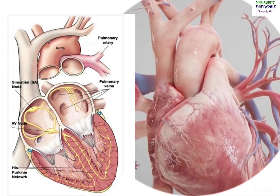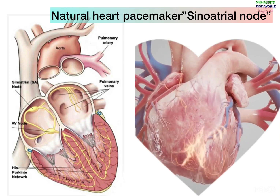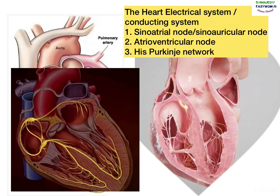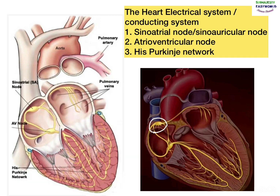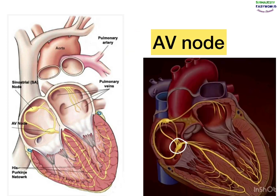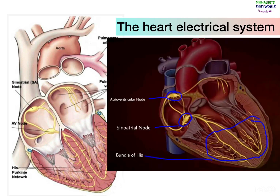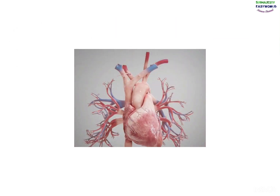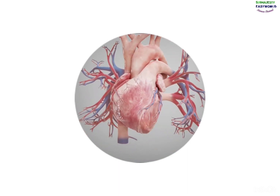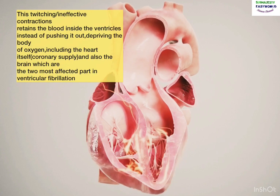Fibrillation occurs when there is misinformation or disruption in the heart's electrical system. The heart's electrical system is made up of the sinoatrial node — known as the natural heart pacemaker — that initiates the beat of the heart. This is located in the right atrium near the superior vena cava, as you can see circled in white. We also have the AV node, known as the atrioventricular node, together with the Purkinje fibers or the bundle of His. These are the network responsible for the electrical conduction of impulses in the heart. If there is disruption in any of these systems, there will be an uncoordinated contraction of the muscle fibers, and when it affects the ventricles, we call it ventricular fibrillation, as you can see.